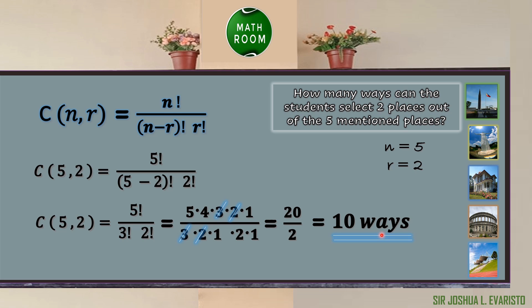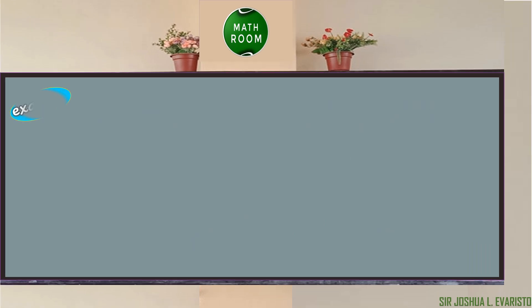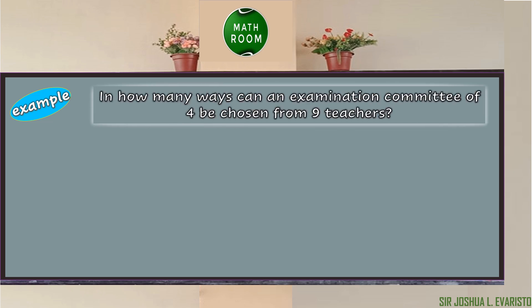Therefore, using the listing method and the formula for combinations, we can confirm that the students can select in 10 different ways. Let's try to solve another example: In how many ways can an examination committee of 4 be chosen from 9 teachers? Because order has nothing to do with membership in the committee, we can solve this using combinations.